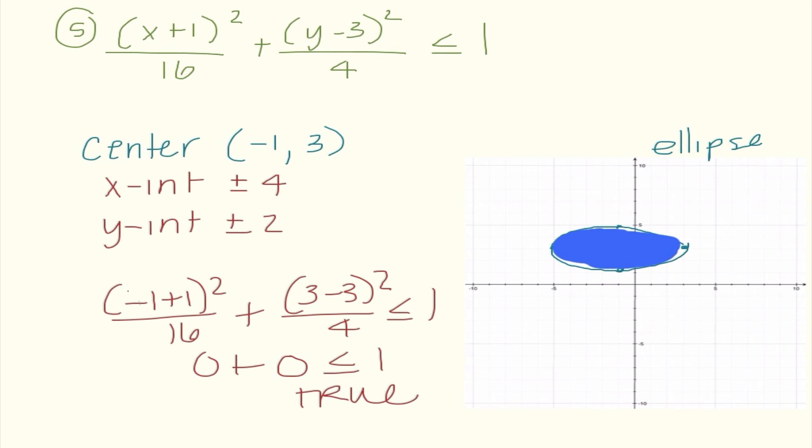In closing, something is an ellipse when both variables are squared, have different coefficients, and are added. Remember that square roots and inequalities still apply with each new conic section. Have fun with your homework, and I'll see you guys later.